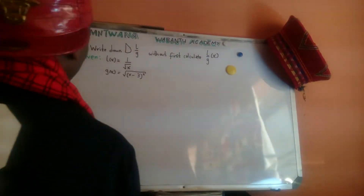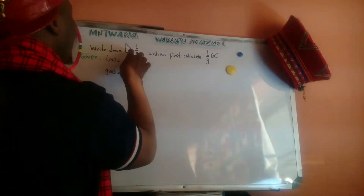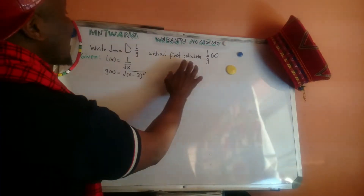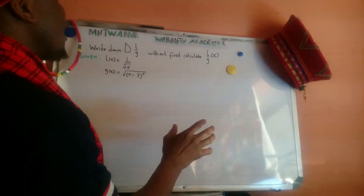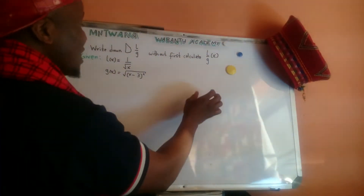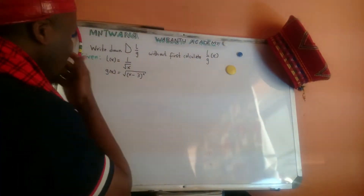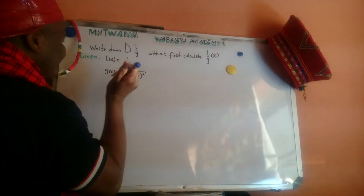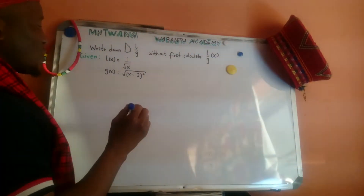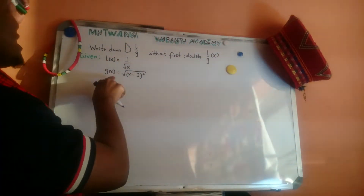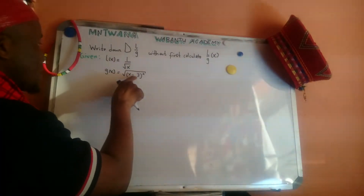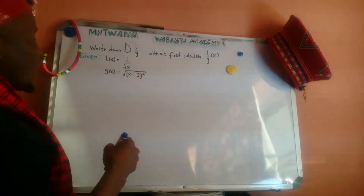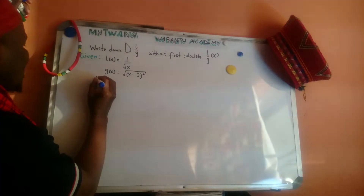Let's get started. This question asks us to write down the domain of l over g without a calculator — meaning they don't want us to calculate it separately. We're given l(x) = 1/√x and g(x) = (x - 3)².